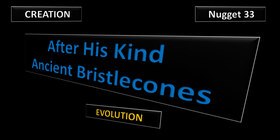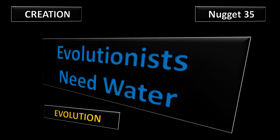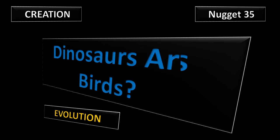Nugget 33: After His Kind. In this nugget, we introduce you to the ancient bristle cones, these fabulous trees. Do they prove evolution? Or do they prove creation? Nugget 34: Why do whales swim? And why does God specifically call out whales? Why doesn't He call them a fish? Are they a mammal? This is part two of the whale nuggets. Nugget 35: Evolutionists need water. What on earth are we talking about? Watch Nugget 35 to find out why evolutionists do need water.